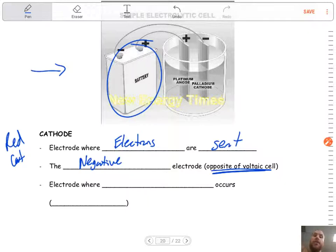Galvanic or voltaic cells, the cathode is positive. It's not the case here. It's been flipped. Think about why that might be.